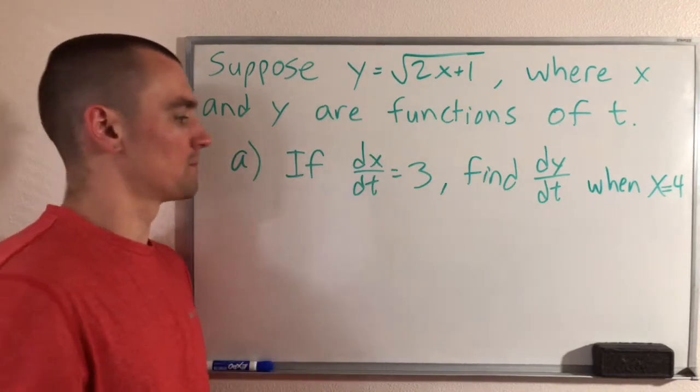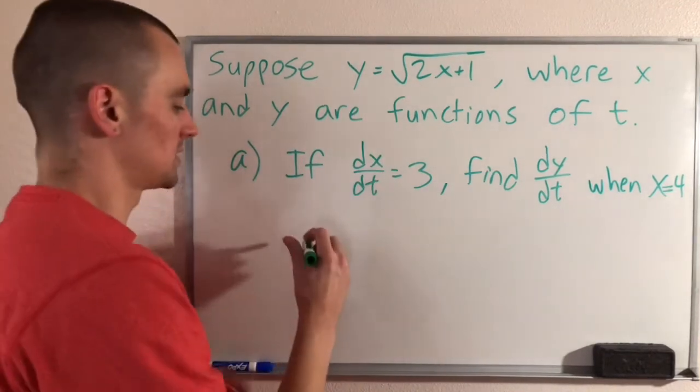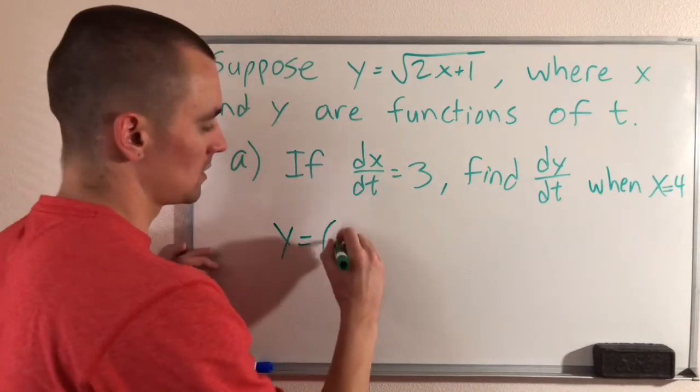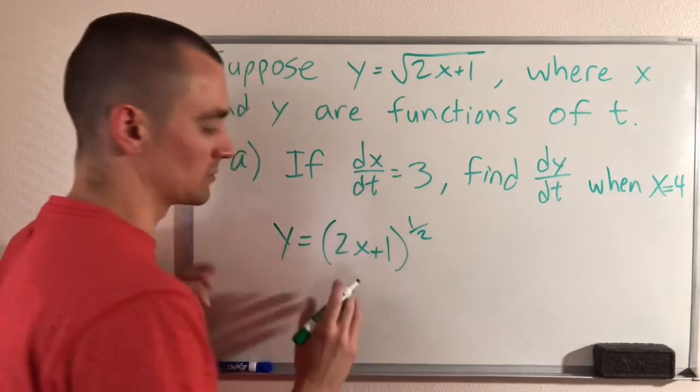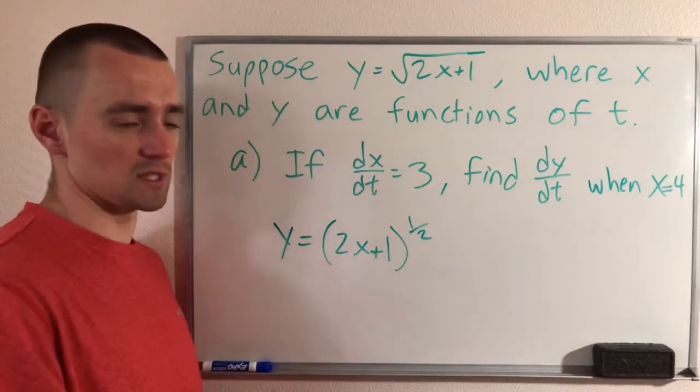Because square roots are kind of a pain in the butt, what we can do is just say y equals 2x plus 1 to the 1/2 power, because raising something to the 1/2 is the same as taking the square root.